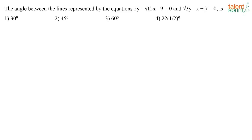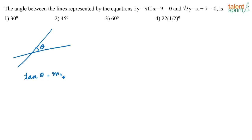The angle between the lines represented by equations 2y minus root 12x minus 9 equals 0 and root 3y minus x plus 7 equals 0 is dash. The formula to find the angle between two lines: if theta is the angle formed between two lines, then tan theta equals m1 minus m2 divided by 1 plus m1·m2, where m1 and m2 represent the slopes of both lines respectively.